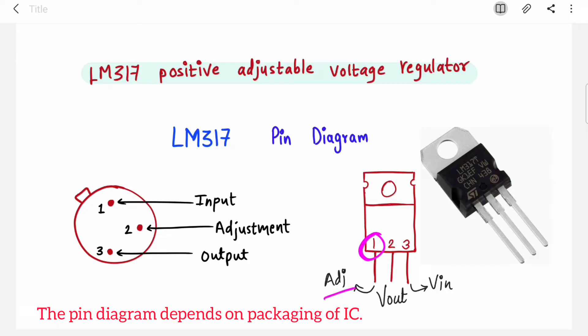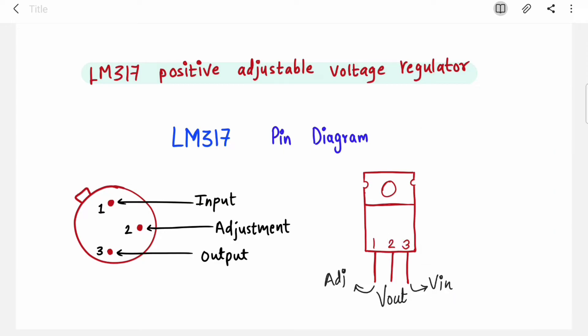In another packaging, your first pin is adjustment. This adjustment pin helps you change the output voltage. Second pin is output where you will take output voltage, and third pin is input voltage. This is the pin diagram of LM317.